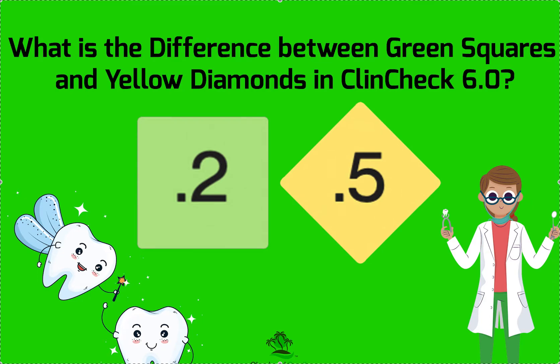Amanda with Straight Smile Solutions, straightsmilesolutions.com. Today we're going to talk about something that gets people really confused in ClinCheck 6.0, which is those green squares versus those yellow diamonds and the numbers that are in them — what you do with them, what they mean.